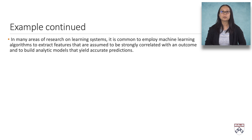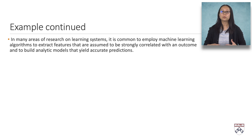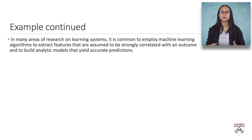In many areas of research on learning systems, it is common to employ machine learning algorithms to extract features strongly correlated with an outcome and to build analytic models that yield accurate predictions. Machine learning is a class of methods developed to process large amounts of data. Some methods are algorithm-based, applying a certain function across large datasets regardless of the data source. The advantage is that machine learning can handle large amounts of data from different sources, streamlining the process of identifying which features are strongly correlated with a certain outcome, such as boredom.